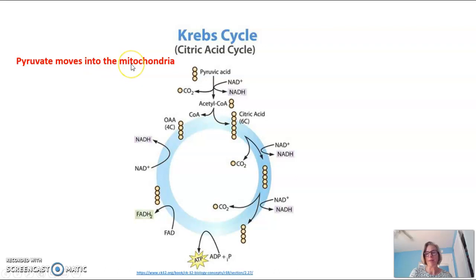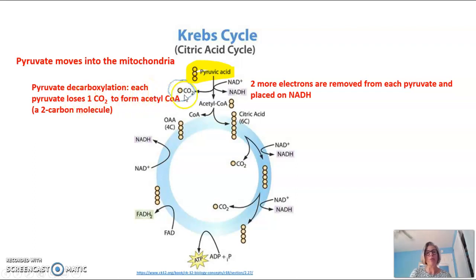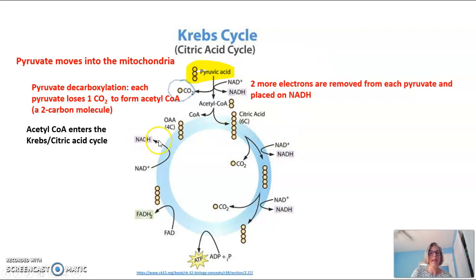Pyruvate moves into the mitochondria. As you recall from the glycolysis video, pyruvate is what is produced at the end of glycolysis, and there are two pyruvate molecules for every original glucose. Pyruvic acid and pyruvate are the same molecule. In the first reaction, we have a decarboxylation: each pyruvate loses one carbon dioxide to form acetyl-CoA. In that reaction, two more electrons are removed from each pyruvate and placed onto NADH. The acetyl-CoA is a two-carbon molecule, indicated here with two orange dots, and that is what enters our Krebs cycle. Remember these two carbons came from pyruvate and originally from glucose.